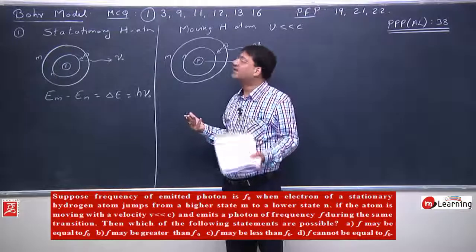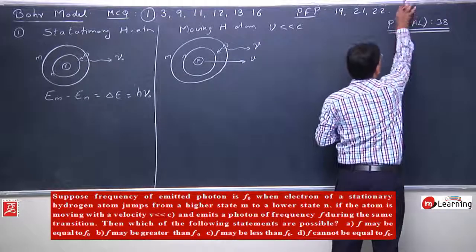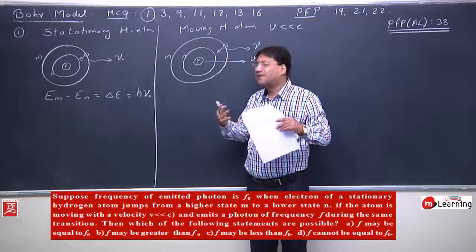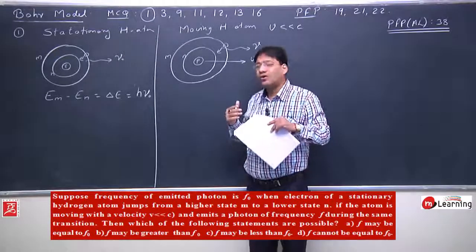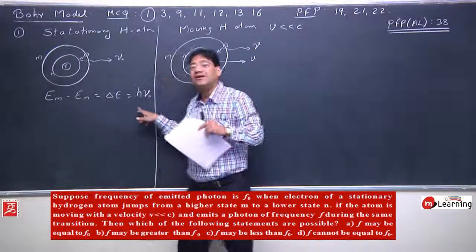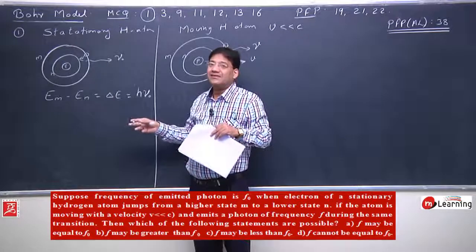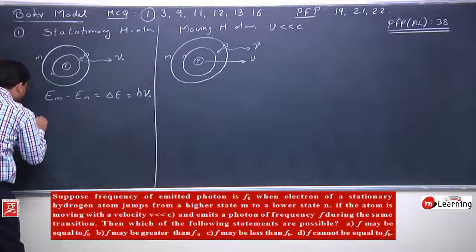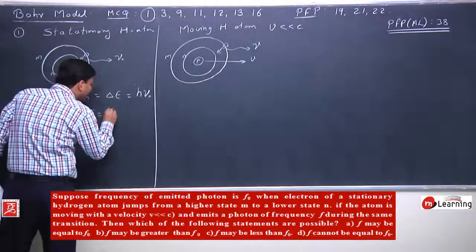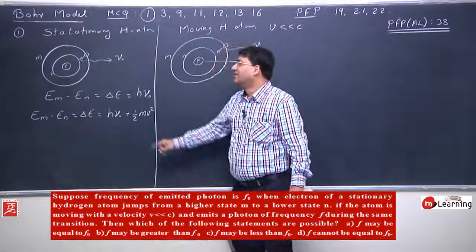I used this assumption here. To validate it, the problems before PFP advanced level 38 provide the conclusion. Let me explain again what assumption I am making. The exact equation should be: Em - En = ΔE = hν₀ + ½mv². The energy change due to de-excitation of the electron would be released as energy of the photon plus some energy as the recoil kinetic energy of the hydrogen atom.